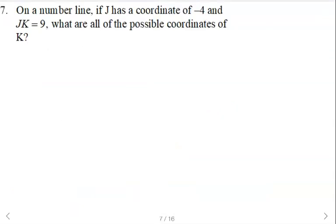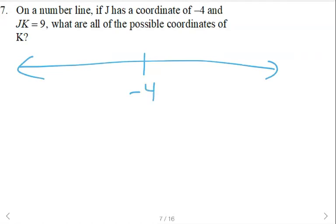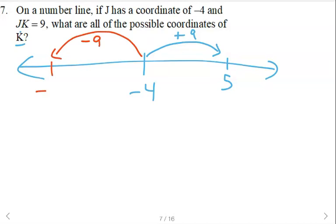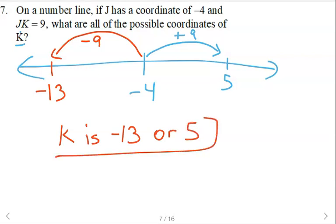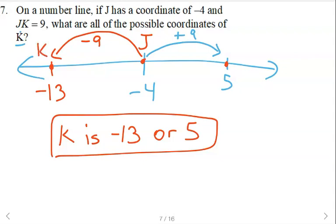On a number line, if J has a coordinate of negative 4, what are all the possible coordinates of K given that JK is 9? Nine units to the right — we would add 9 and be at 5. Nine units to the left — we would subtract 9 and be at negative 13. So K could be negative 13 or 5. Whether K is at 5 or at negative 13, either way those distances are 9.